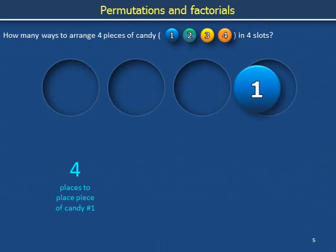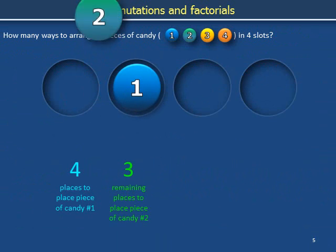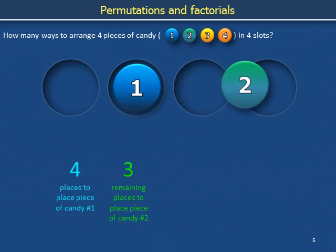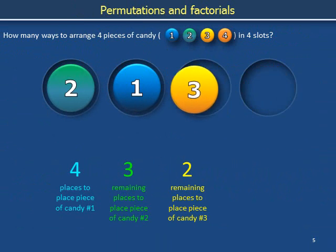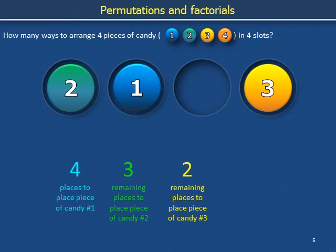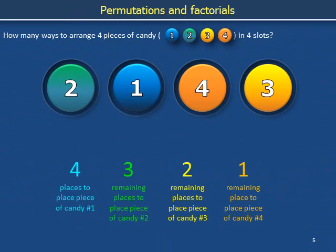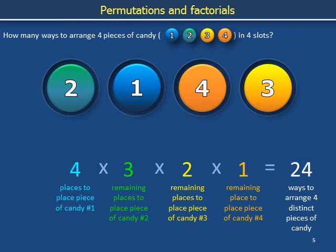There are four places where we can place the first piece of candy, three places where we can place the second, two places where we can place the third, and one place in which we can place the final piece of candy. Four times three times two times one equals 24 ways to arrange four distinct pieces of candy in a row.